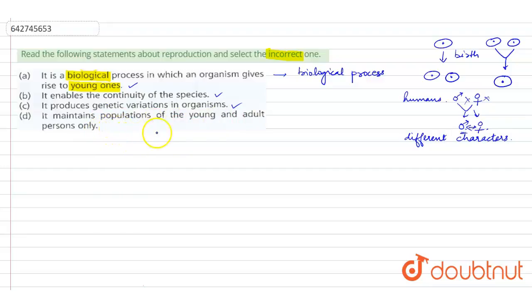Now comes: It maintains populations of the young and adult persons only. So reproduction maintains the population of all persons in all age groups. Why? Because if it is giving rise to a baby, that baby will grow up into a teenager, then it will grow young, then it will turn into an adult, then again it will come as a baby. So what is this doing? This is maintaining the population of all persons. So here we know that this answer is incorrect. So this is the correct answer for this question because we are asked to tell which one is the incorrect answer.